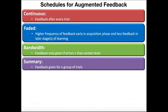The last schedule is called a summary schedule. This is when feedback is given for a group of trials. For example, if a person does five trials of something and then you give feedback at the end of those five, that would be summary feedback.